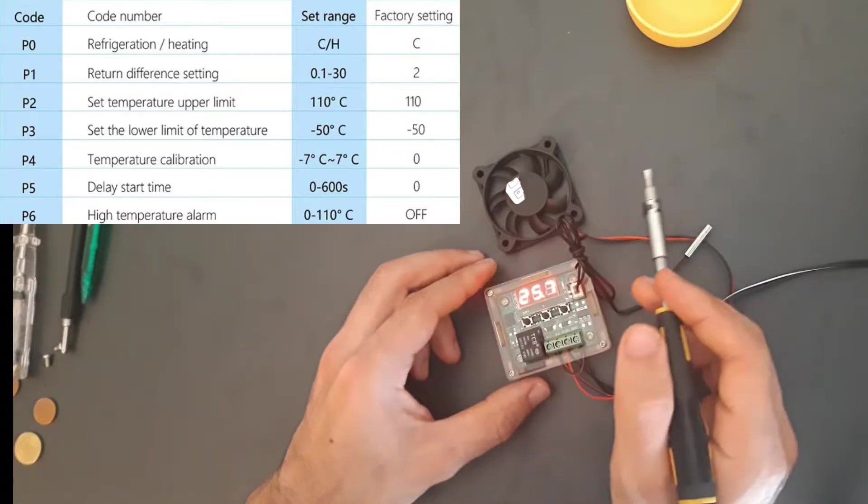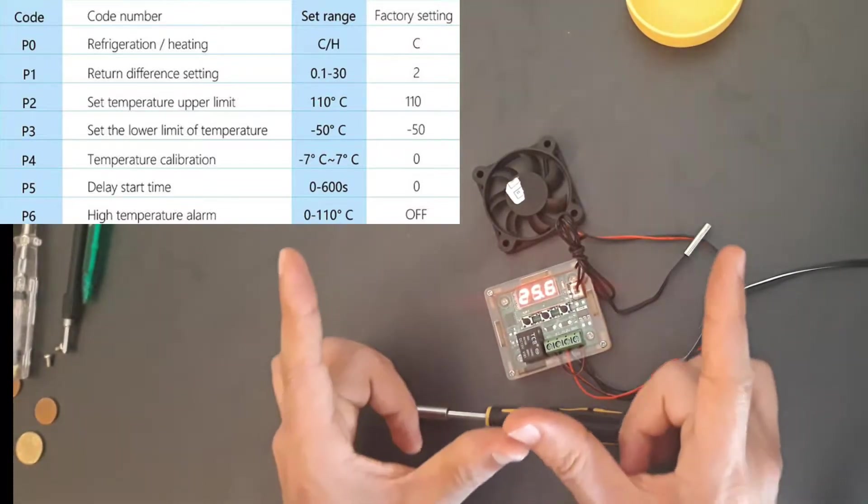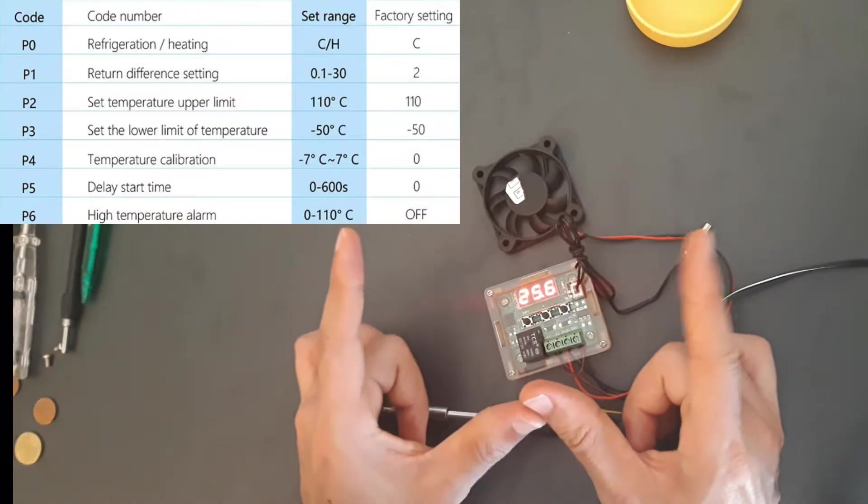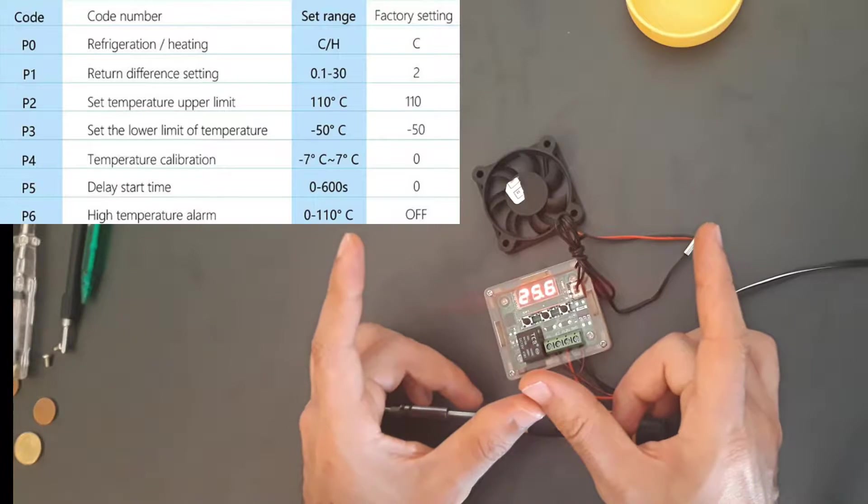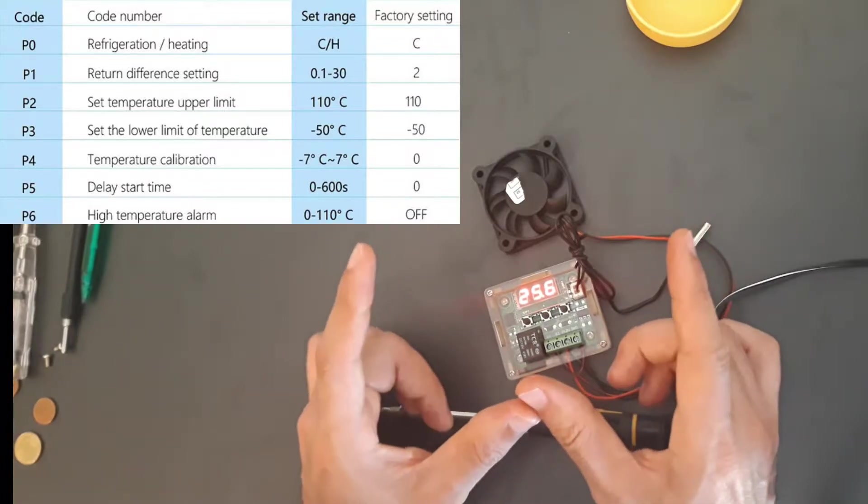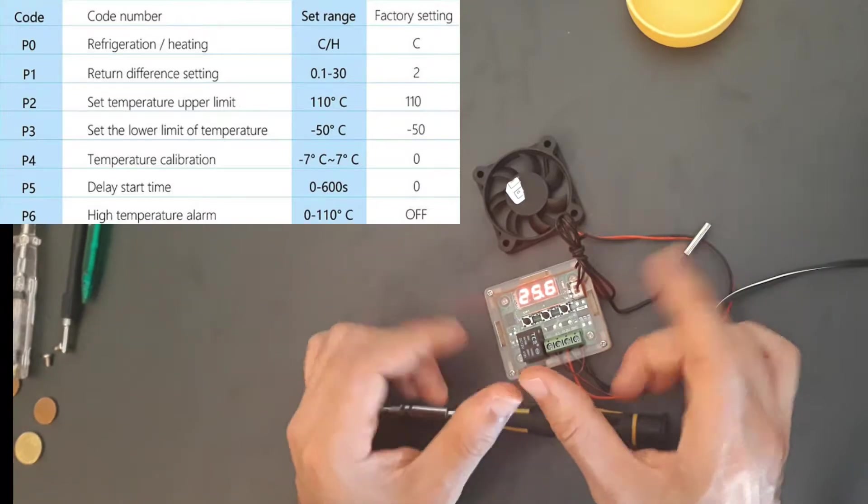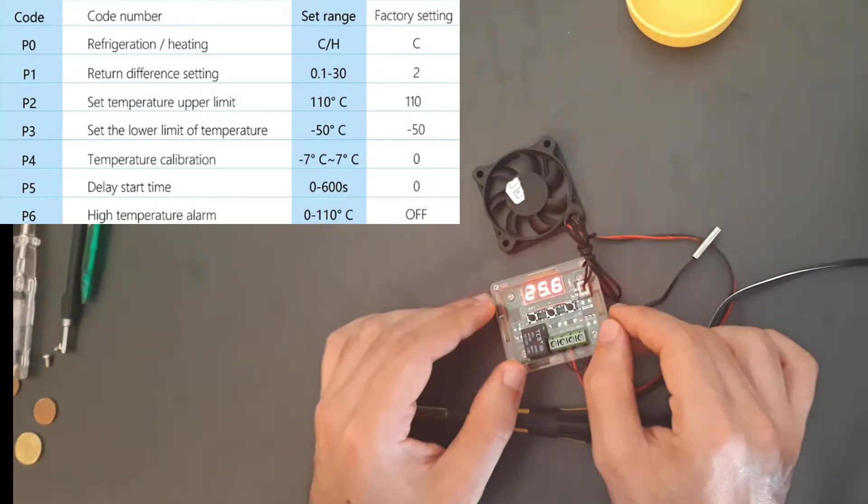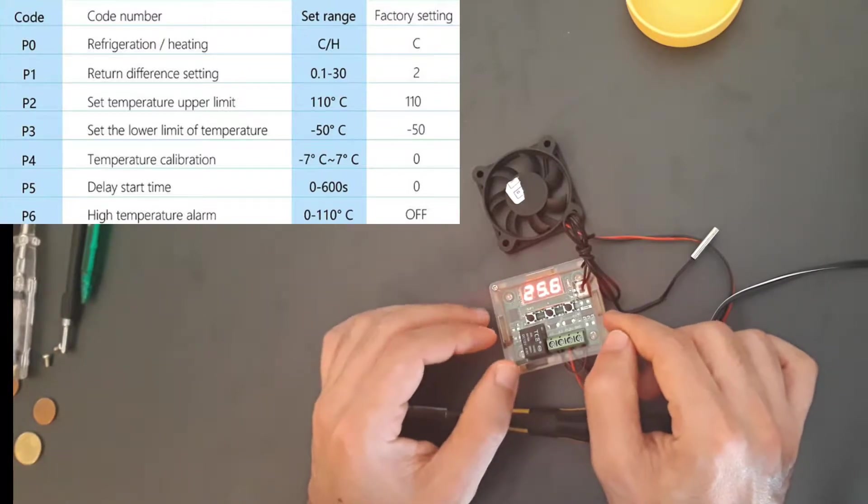So what it does: if you set it to cool, it will operate within the temperature range you define on the device. If you set it to heat, it will operate outside the temperature range. That's basically what it does. The P1, the program P1, is the return.